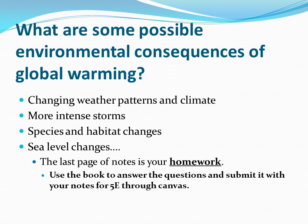So all of this is leading up to: what are some possible environmental consequences of global warming? We could have changing weather patterns and climate. With increased temperature and increased ocean temperature, we're gonna have more intense storms — with more heat in the ocean's water, it can fuel larger hurricanes. Species and habitat changes, and sea level changes.